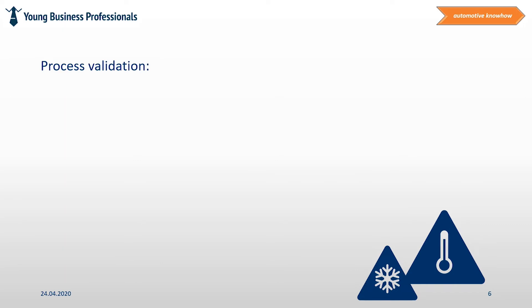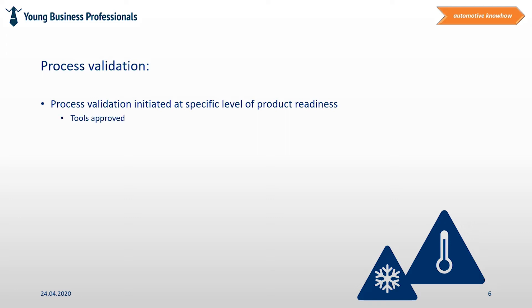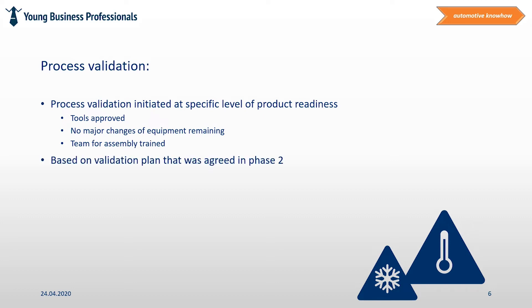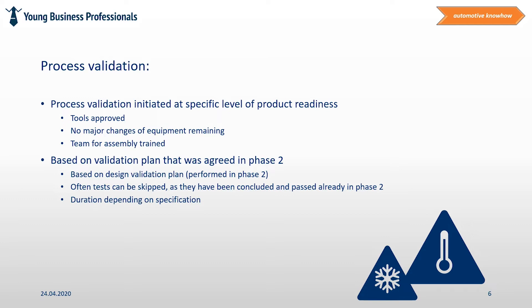Process validation. As soon as the product and the equipment achieve a certain readiness, the process validation may start. All tools should be approved and at least no major changes should be performed anymore at the equipment. In addition, the team that assembles the components for validation should be trained. Components will be produced and provided for the test. This test plan is based on the design validation plan that was defined and performed already in Phase 2 of the project. Sometimes tests can be skipped or shortened as they have been performed already in the product design phase. The duration of the test depends on the specification, and the overall target is to prove that the product requirements can be achieved by simulating real situations through these tests.